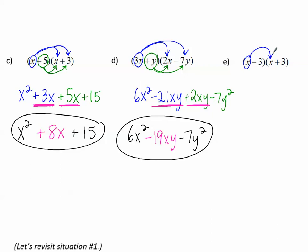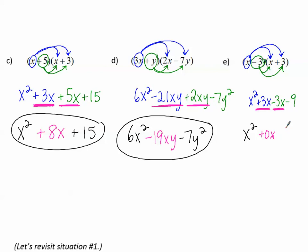One more. x distributes: x times x is x squared; x times positive 3 is positive 3x. Now negative 3 times x makes negative 3x; negative 3 times 3 is negative 9. Combining like terms: x squared is the only one; positive 3x and negative 3x make 0x — which is nothing. And the constant term is negative 9. So we write the answer as x squared minus 9. This is called a difference of squares — we'll talk more about those special patterns soon.